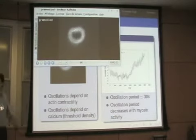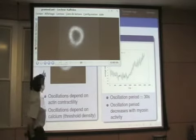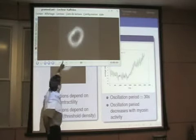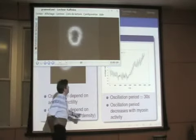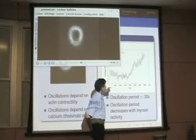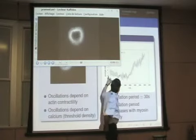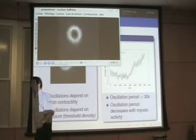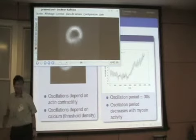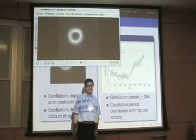The cell can oscillate like this for a few hours. What Pranoid did is cut the cell along one radius, and what is plotted here is this radius as a function of time. There is a long-time drift. If you take the Fourier transform of this, there is an extremely well-defined period — in this case it was 37 seconds.